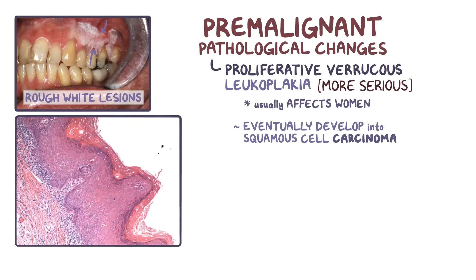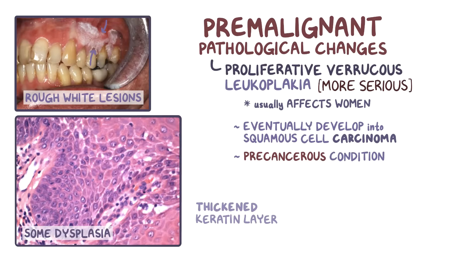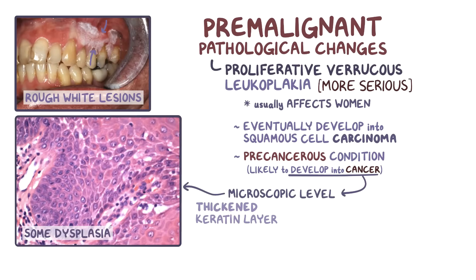At the cellular level, leukoplakia typically shows a thickened keratin layer. Since keratin absorbs water, a thick keratin layer looks white when it's wet. Leukoplakia might show cells that have undergone some degree of dysplasia, meaning that they look abnormal in some way, but are not cancerous or malignant yet. However, leukoplakia is considered a pre-cancerous condition — compared to normal tissue, it's more likely to develop into a cancer in the future. That change could happen at the microscopic level, meaning that the lesion might look the same on the outside even though the cells have become cancerous.